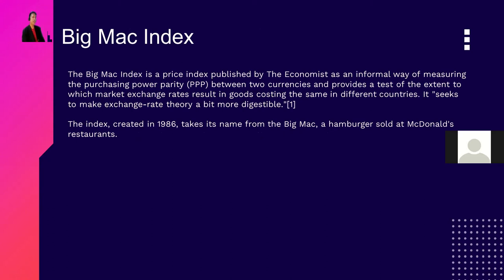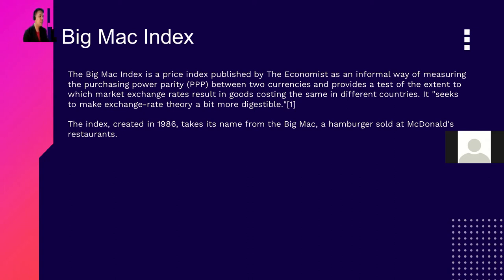Now let's talk about the Big Mac Index. The Big Mac Index is a price index published by The Economist as an informal way of measuring purchasing power parity, or PPP, between two currencies. It provides a test of the extent to which market exchange rates result in goods costing the same in different countries, seeking to make exchange rate theory more digestible. The index was created in 1986 and takes its name from the Big Mac hamburger sold at McDonald's.